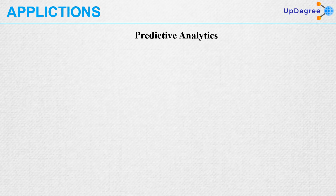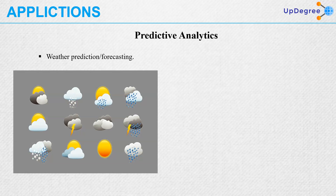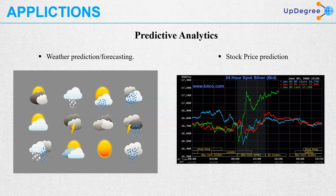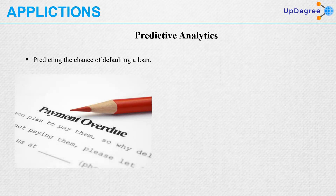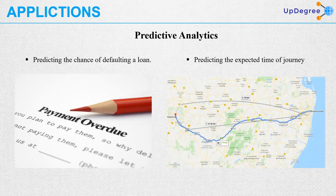Now, applications. Predictive analytics — so let's say weather prediction or forecasting, stock price prediction, predicting the chance of defaulting a loan, or predicting the expected time of a journey. All kinds of predictive analytics are basically done by machine learning and artificial intelligence nowadays.